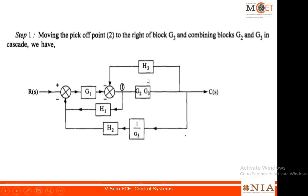Now branching point one is going to be moved towards the right of the block g2g3. When I move this branching point to the right, I can place it here so that the feedback block there gets freed, allowing a loop reduction to be applied and the loop to be made into a single block. For that purpose I am moving this branching point to the right of g2g3.